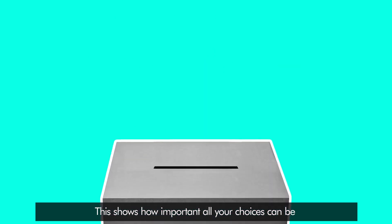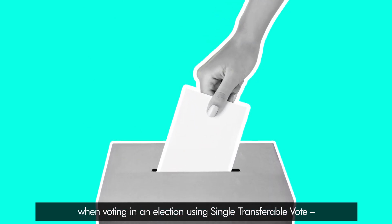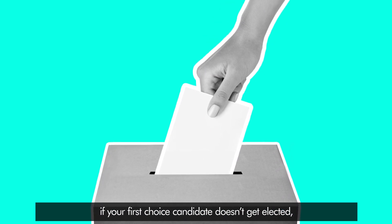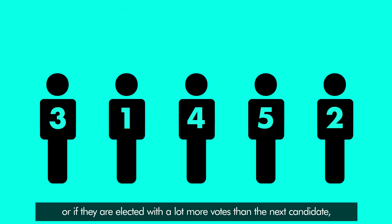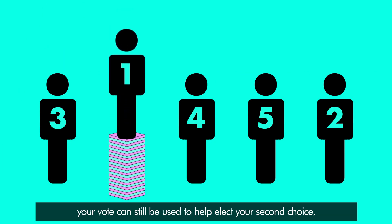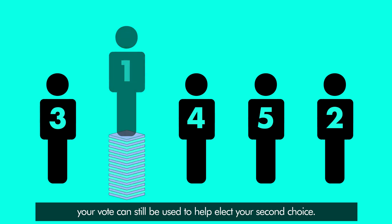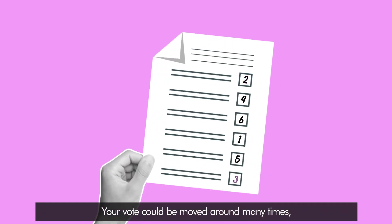This shows how important all your choices can be when voting in an election using Single Transferable Vote. If your first choice candidate doesn't get elected, or if they are elected with a lot more votes than needed, your vote can still be used to help elect your second choice. Your vote could be moved around many times, playing a part in electing some or all of the positions in your area.